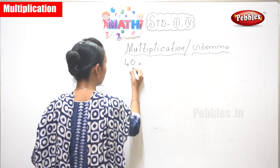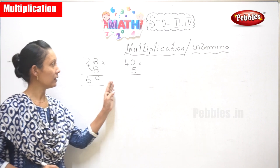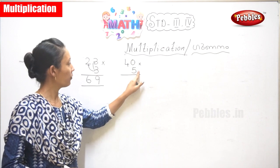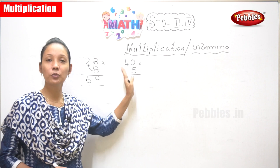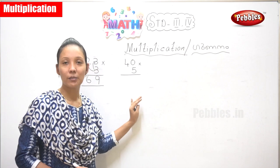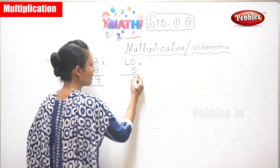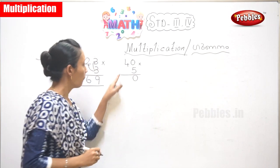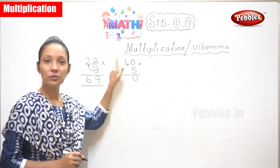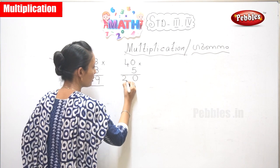40 into 5. Now 40 into 5. What is the first one? It's very simple. So 5 into 0 is what? Any number into 0 is 0. So that gives us 0. Now next is 5 fours are — or 4 fives are — 20. So your answer is 200.